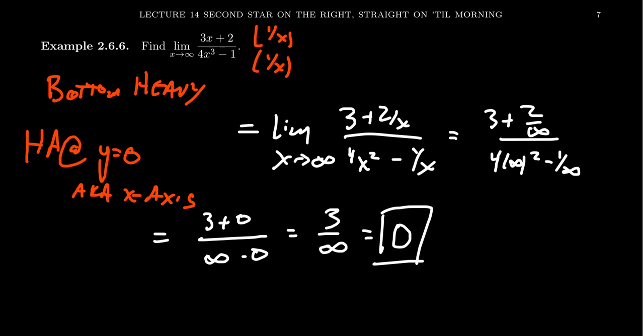Some people get a little upset because you can't do arithmetic with infinity. If you wanted to avoid that, you could multiply by 1 over x cubed instead. That would give you a 0 on top and 4 in the denominator, avoiding arithmetic at infinity entirely. The reason I didn't do that is I want you to approach all three of these problems with the same perspective — look at the smaller power that helps you out, and kill off the slower-growing function. In this case, that's 3x compared to 4x cubed.